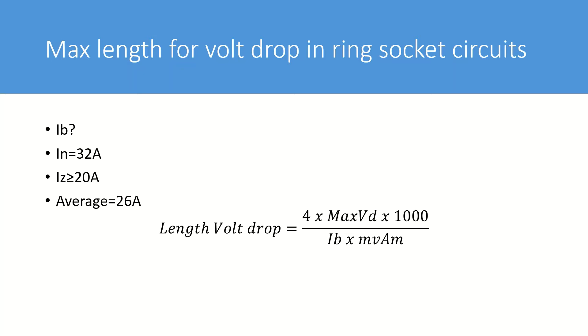One solution to this is by taking the average of 32 amps the rating of the protective device and 20 amps and we get a figure of 26 amps. So this can be used in place of the design current in this equation here.